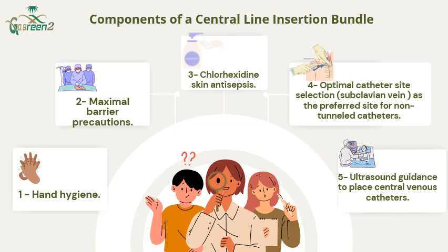There are five components of the central line insertion bundle. The first and most important is hand hygiene. The second is maximal barrier precautions — for both the operator and the patient. The third is chlorhexidine skin antisepsis. The fourth is optimal catheter site selection, with the most preferred site being the subclavian vein for non-tunneled catheters. The fifth component is ultrasound guidance to place the central venous catheter.